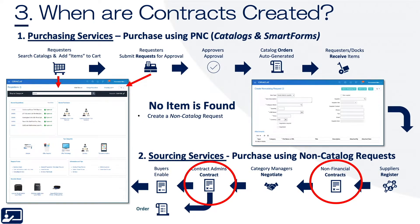Third: when are contracts created? You can see our procurement cloud diagram here where we have purchasing service and sourcing services. When you're purchasing, particularly self-service, you're probably using a contract that is related to an agreement. It's only when you don't have catalog-driven content or pre-negotiated content that you would go out and invoke or author contracts.